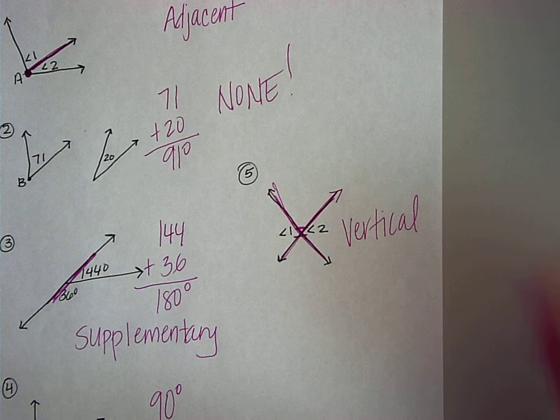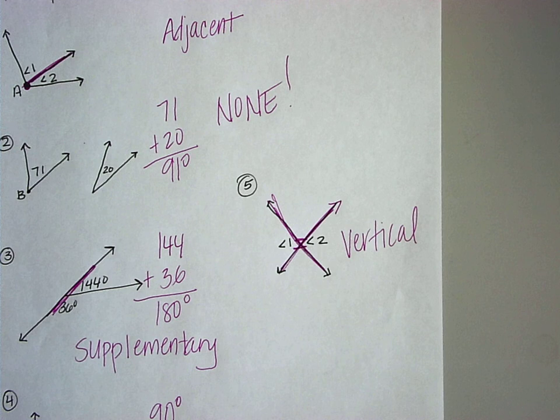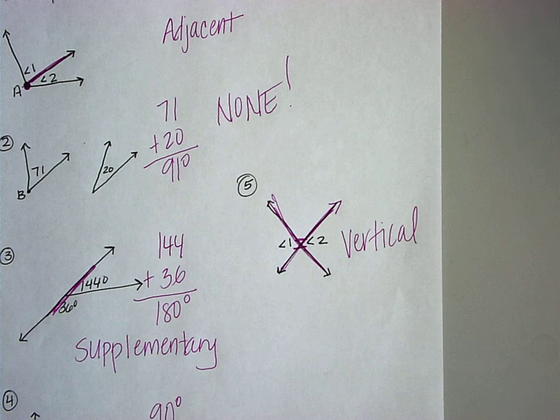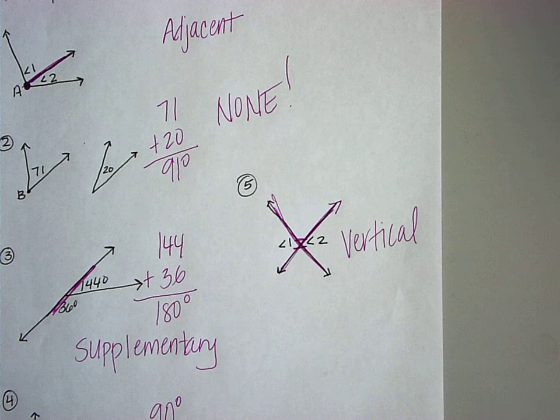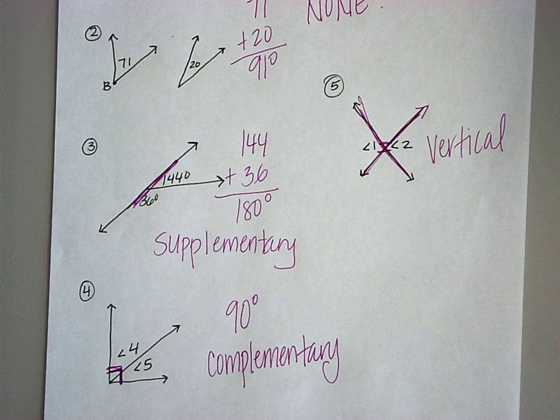So to review: adjacent angles will never have degrees — they have a common side and a common vertex. Supplementary equals 180 degrees and forms a straight line. Complementary is 90 degrees and forms a right angle. And finally, vertical angles are across from each other with two intersecting lines — they are congruent, which means equal. In a few minutes, we're going to learn how to solve equations with these relationships.